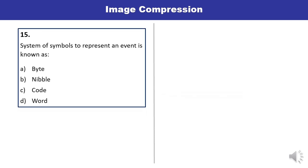Question 15: A system of symbols to represent an event is known as — byte, nibble, code, or word? You can pick this answer very quickly. It is a code. C is the correct answer.